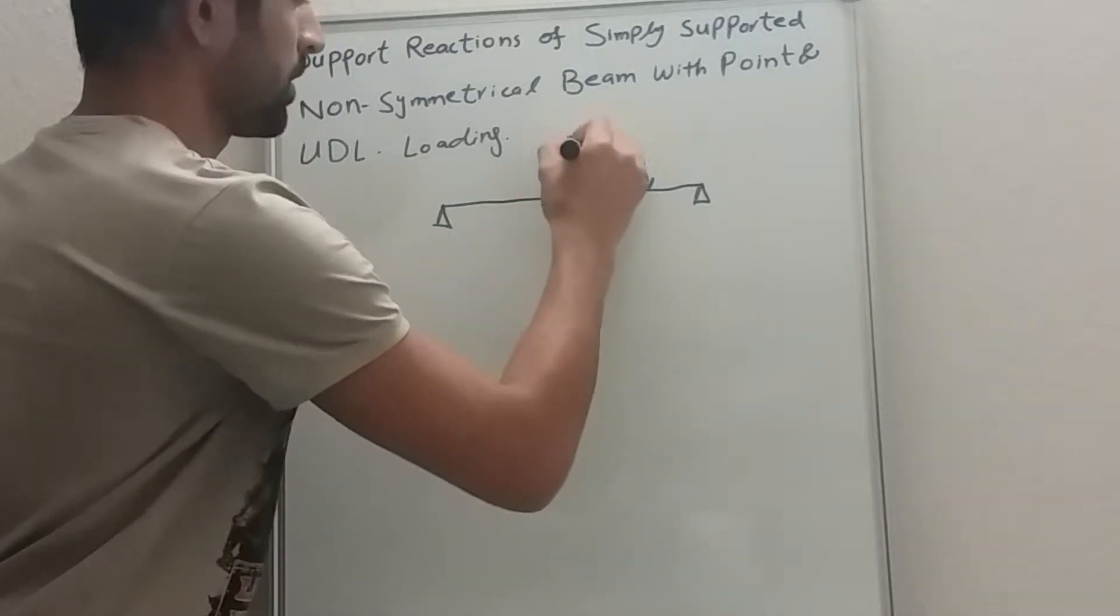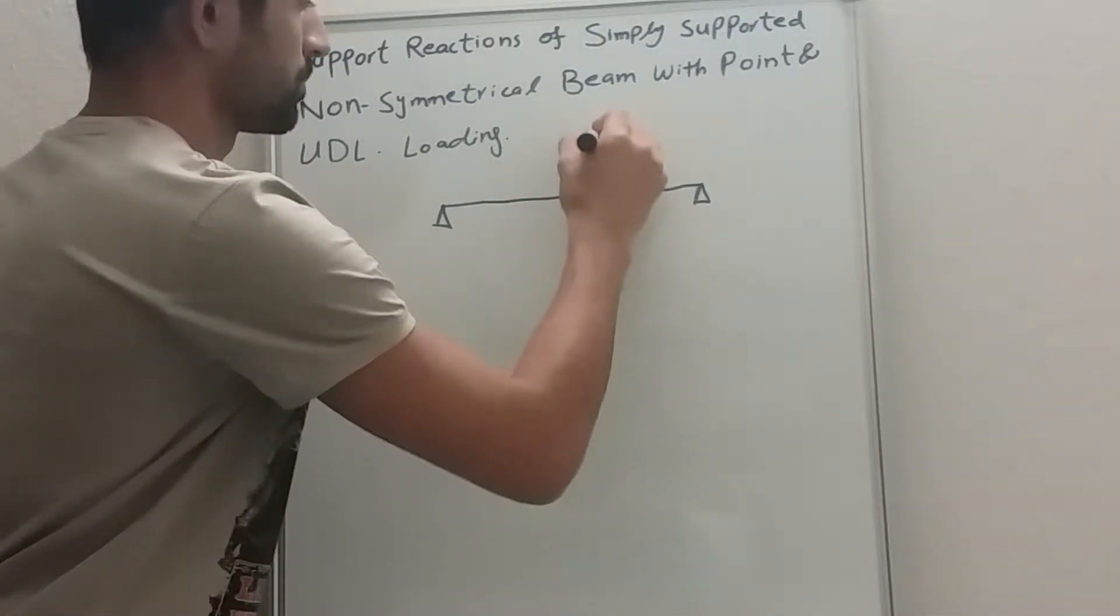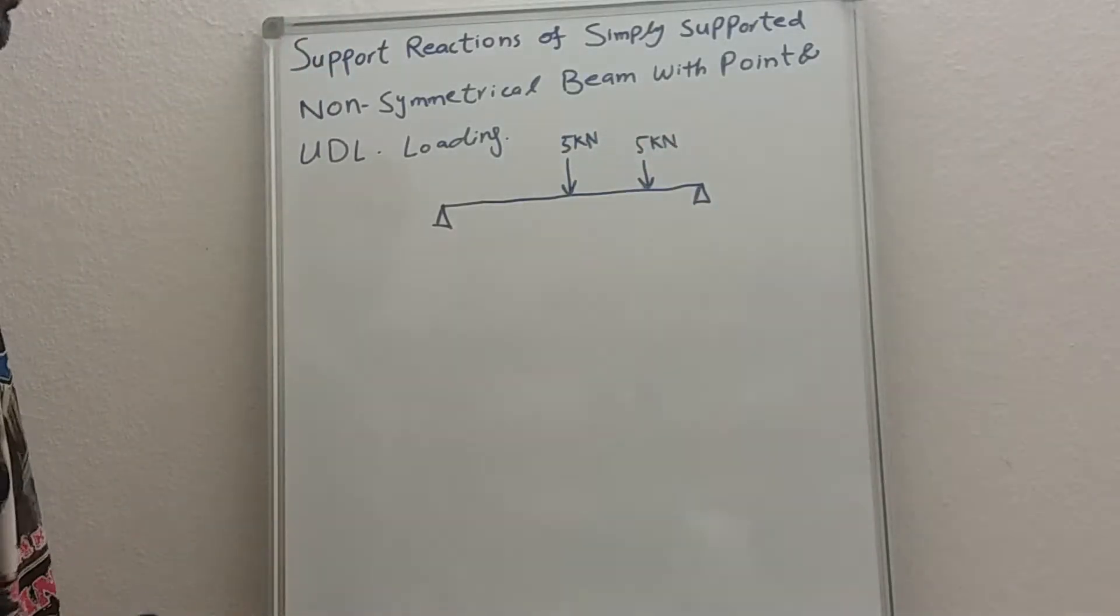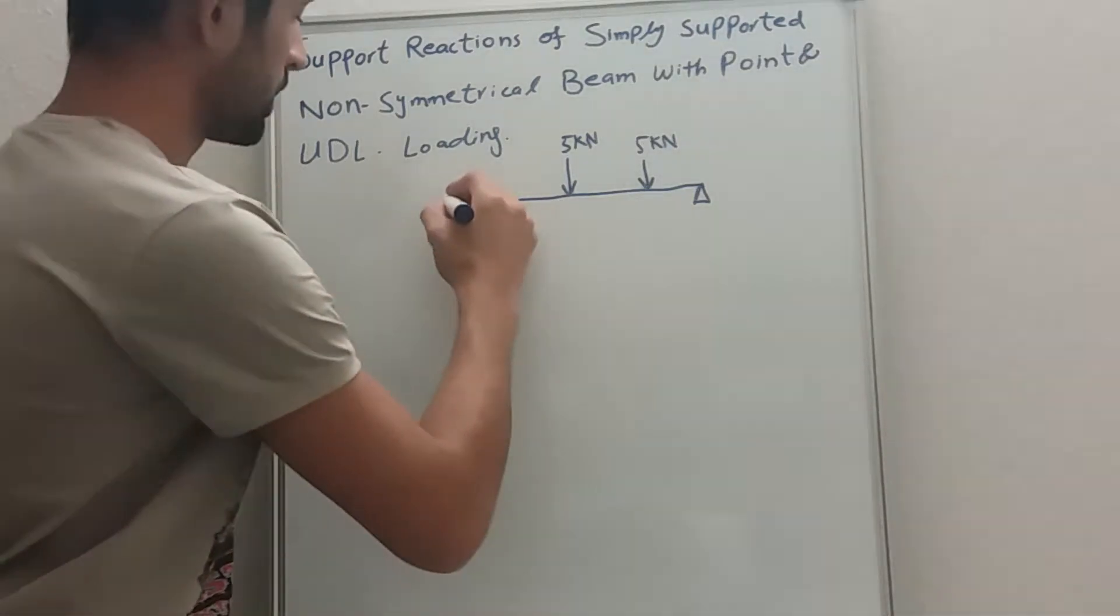This is, let's say, five kilonewtons, and this one is also five kilonewtons. And we have a UDL here.